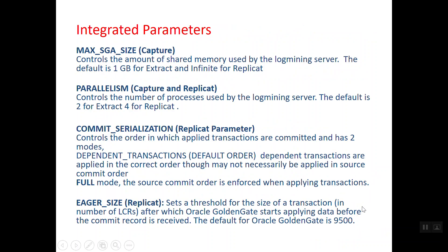On the SGA side, max SGA size is a very important parameter — it defines the size taken within the stream pool. Configuring the stream pool on the source side is important; if not configured, memory will be taken from the shared pool, which is undesirable. The default is 1 GB for extract. This 1 GB is good enough for approximately 50,000 to 90,000 statements per minute.